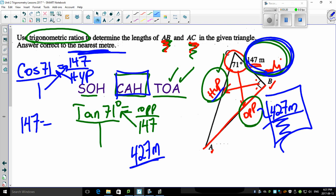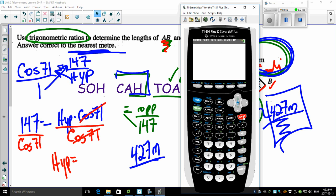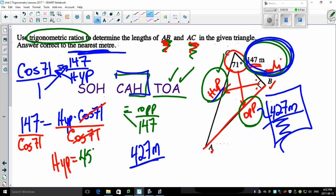This equals our hypotenuse times cos 71. Let me get rid of some of this stuff and get some more room in here. To solve for hypotenuse, get rid of cos 71 by dividing both sides. That cancels, leaving hypotenuse equals to, here we go. Bring up the calculator. 147 divided by the cos of 71 equals 451.5. So, 452 meters.